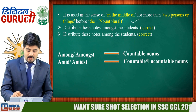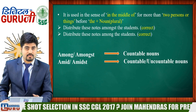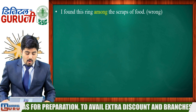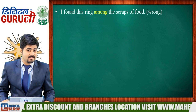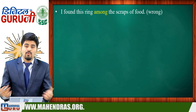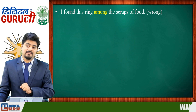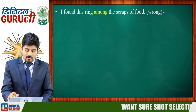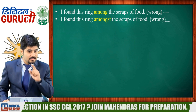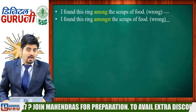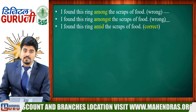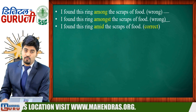All other uses of amid/amidst are the same as among/amongst. For example: 'I found this ring amid the scraps of food' — 'scraps of food' is an uncountable reference here, so 'among' or 'amongst' cannot be used, but 'amid' works correctly. This is why amid and amidst are needed for uncountable nouns.